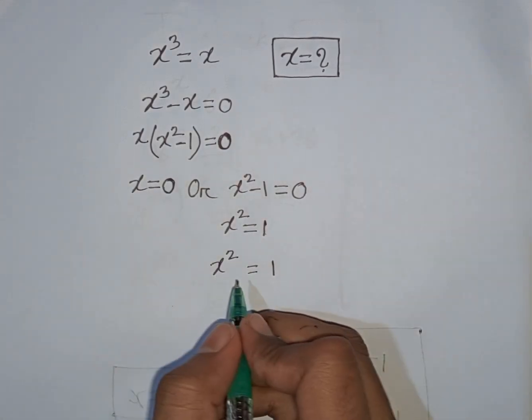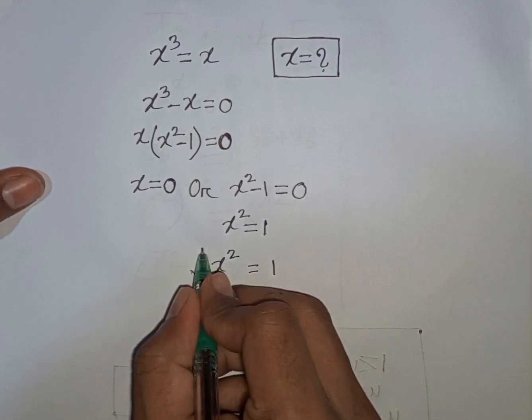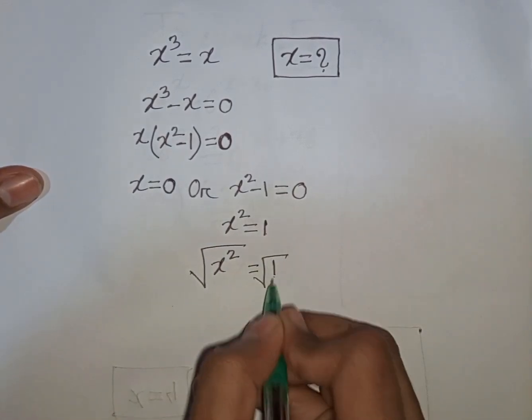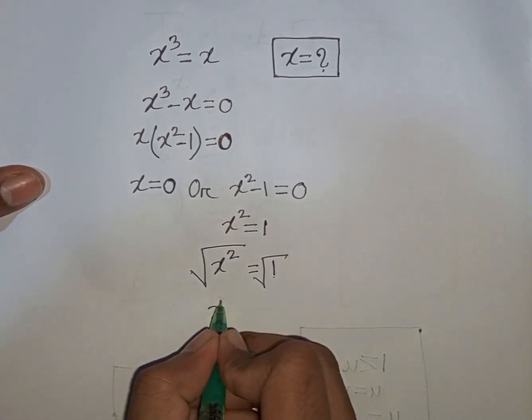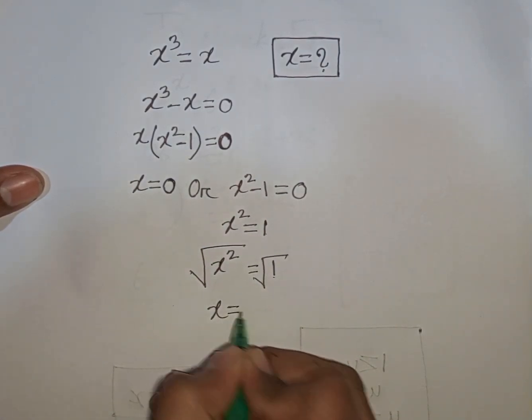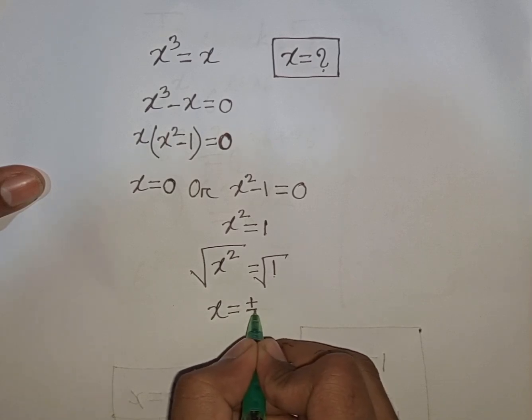We need the value of x, so we apply a square root to both sides. A square root of x square is equal to a square root of 1. This square root and this square will be cancelled. So here x is equal to plus or minus square root of 1, that means 1.